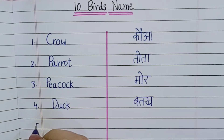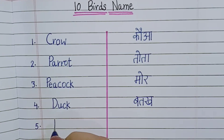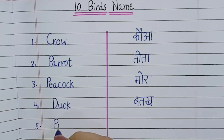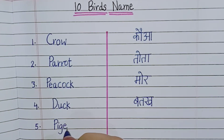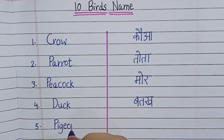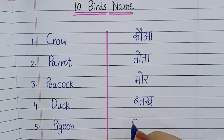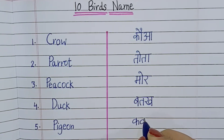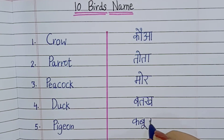Number 5: P-I-G-E-O-N, Pigeon. Pigeon means Kabooter.